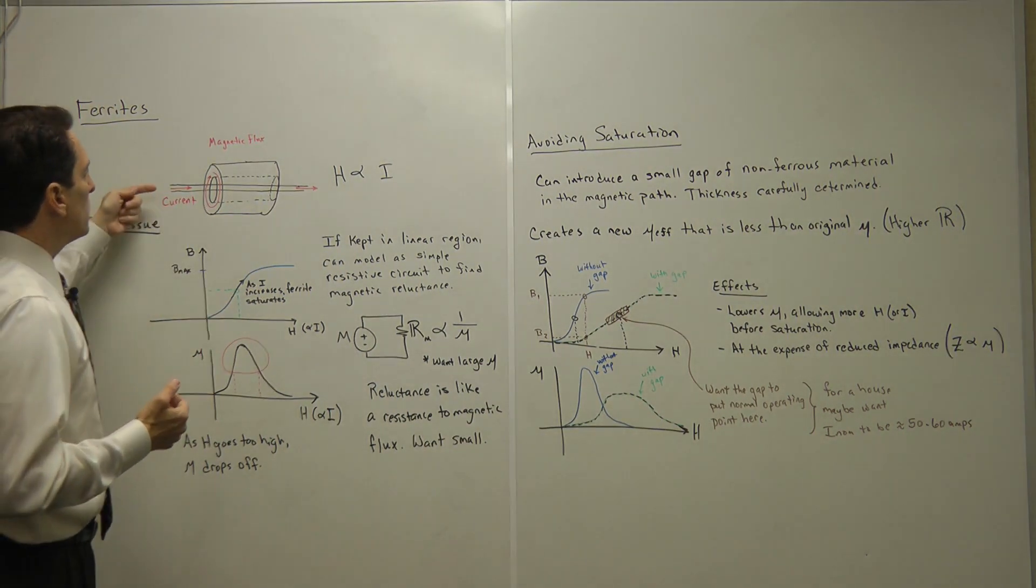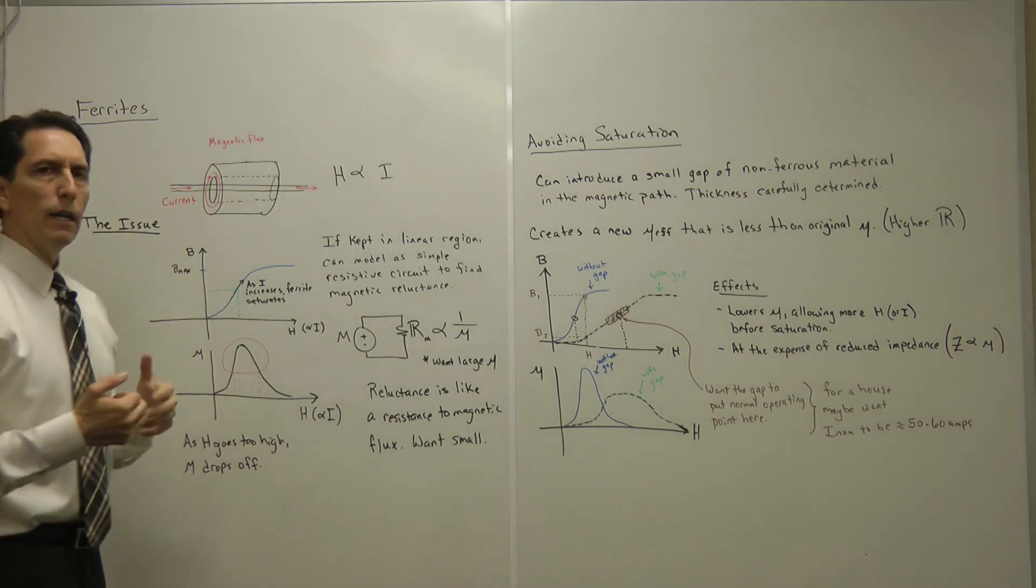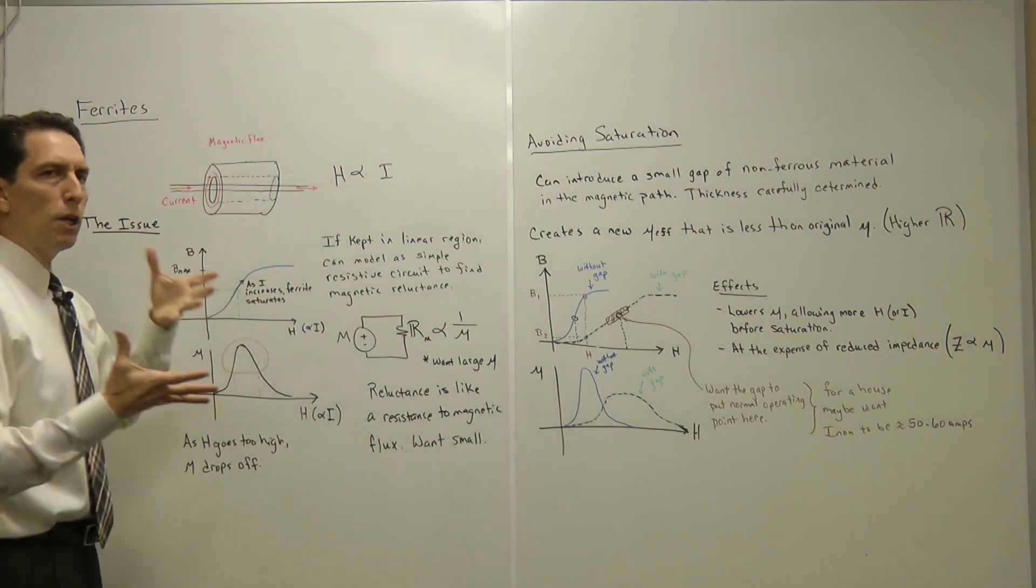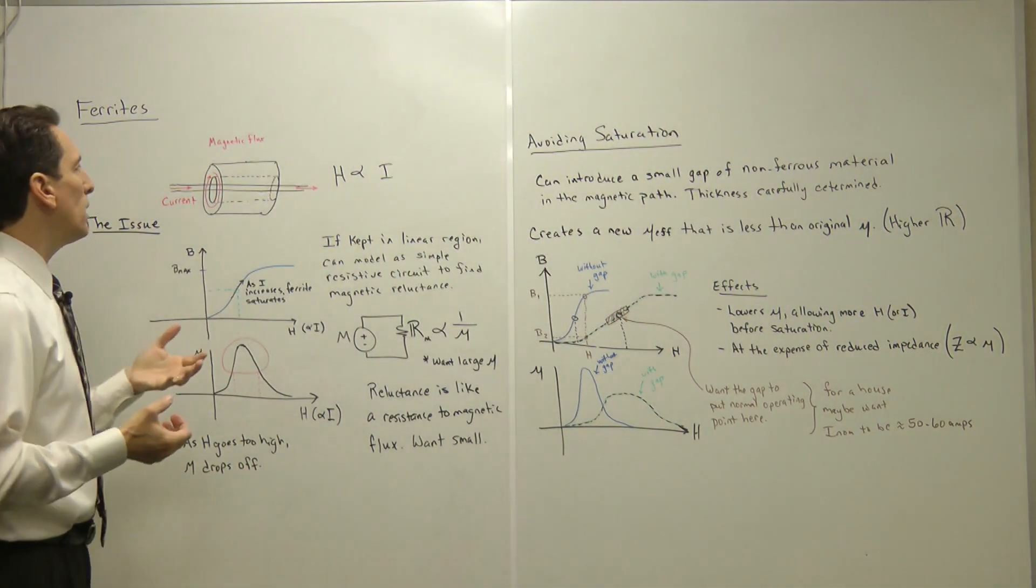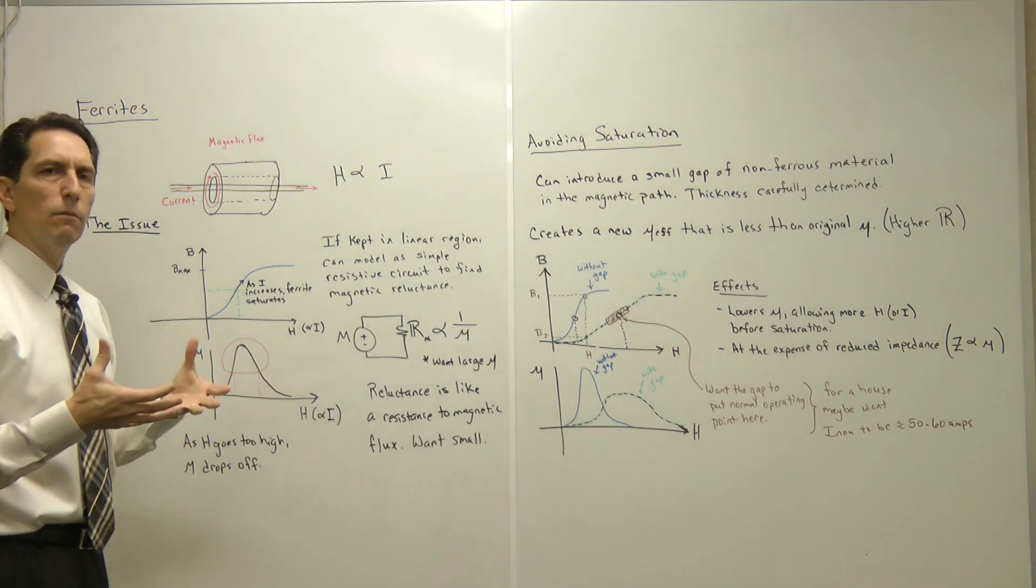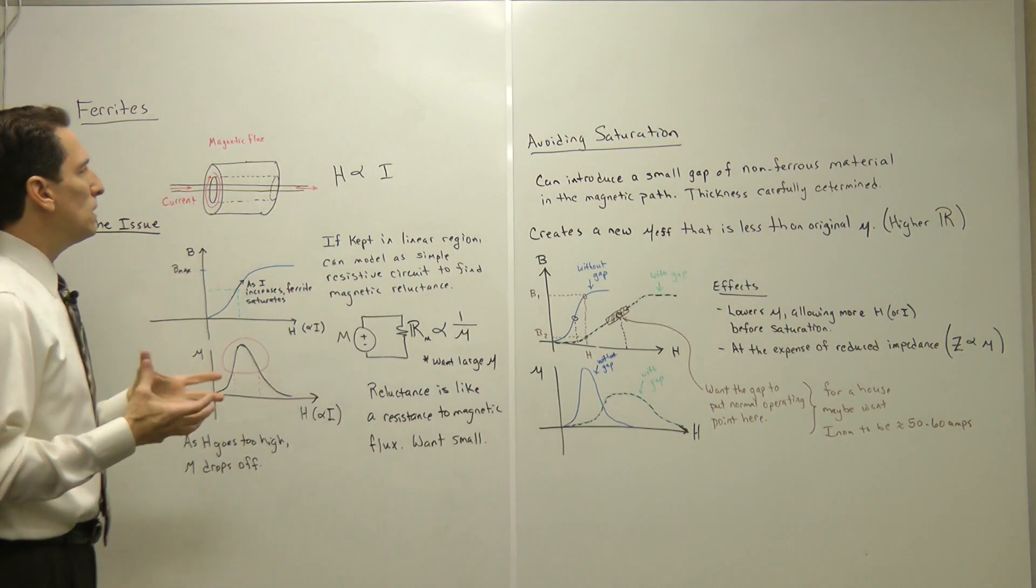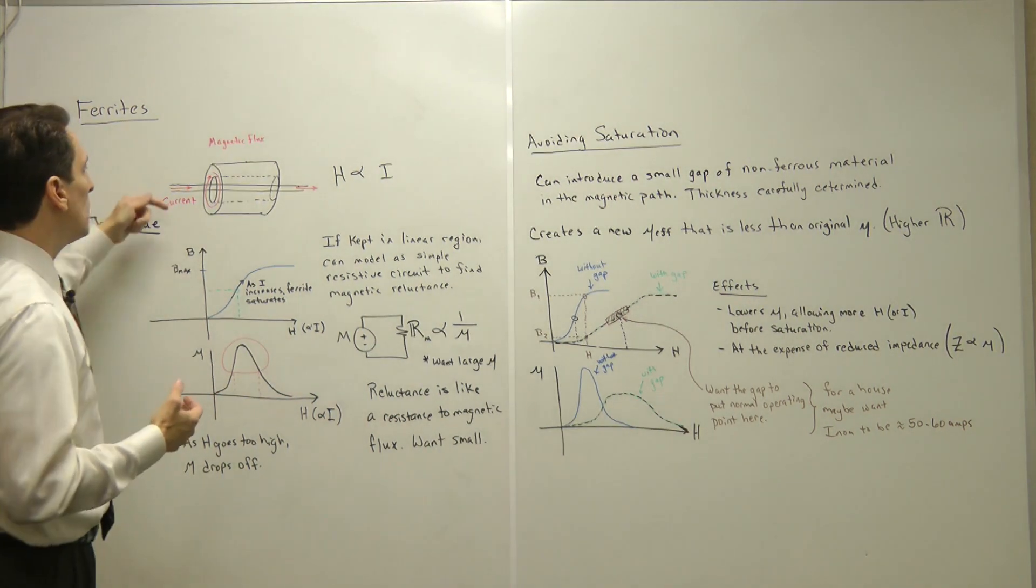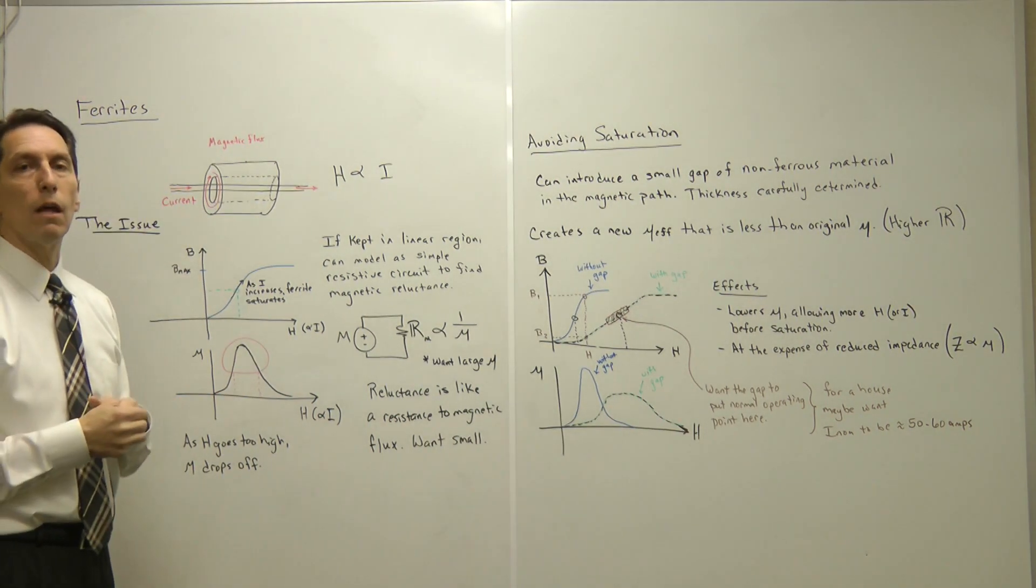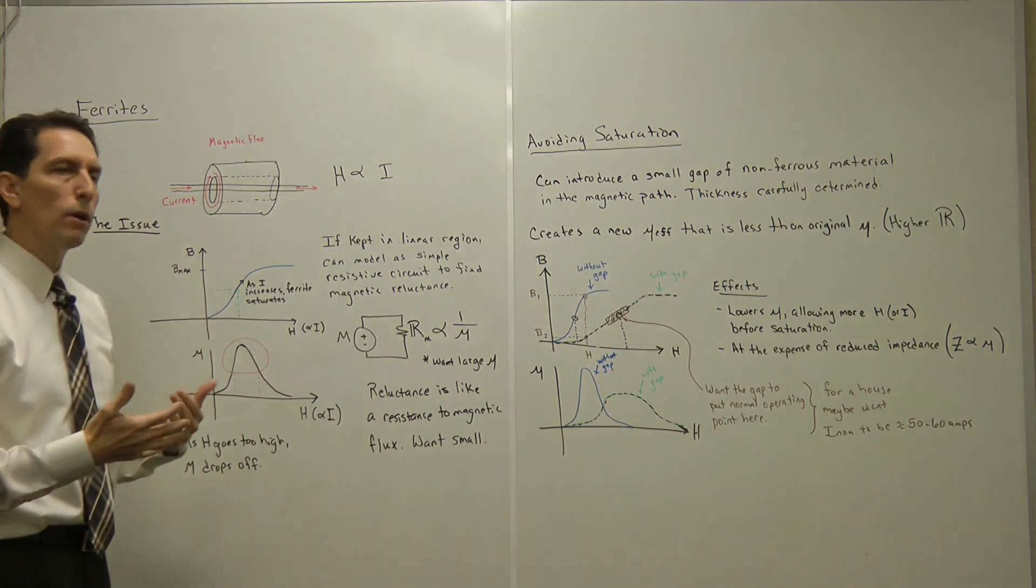Now, how does it work? The way it works is if the current tries to change, it has to change that magnetic field that's been built up. There's always some delay, some resistance to doing that. So this ferrite essentially acts as a dampener to any sudden changes of current on the incoming line. That's what you want it to do to suppress those transients.